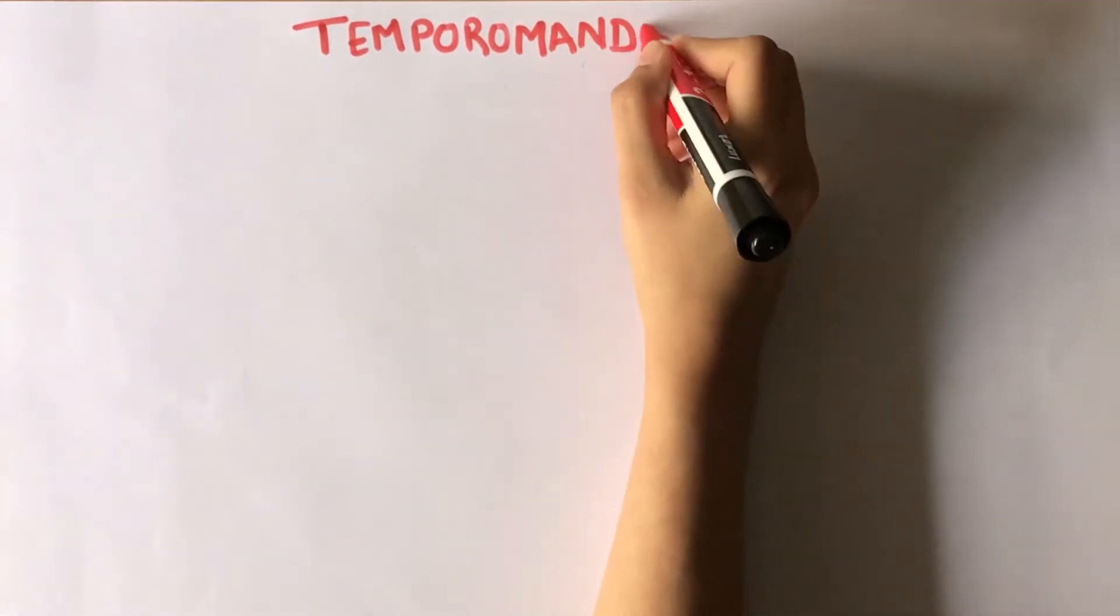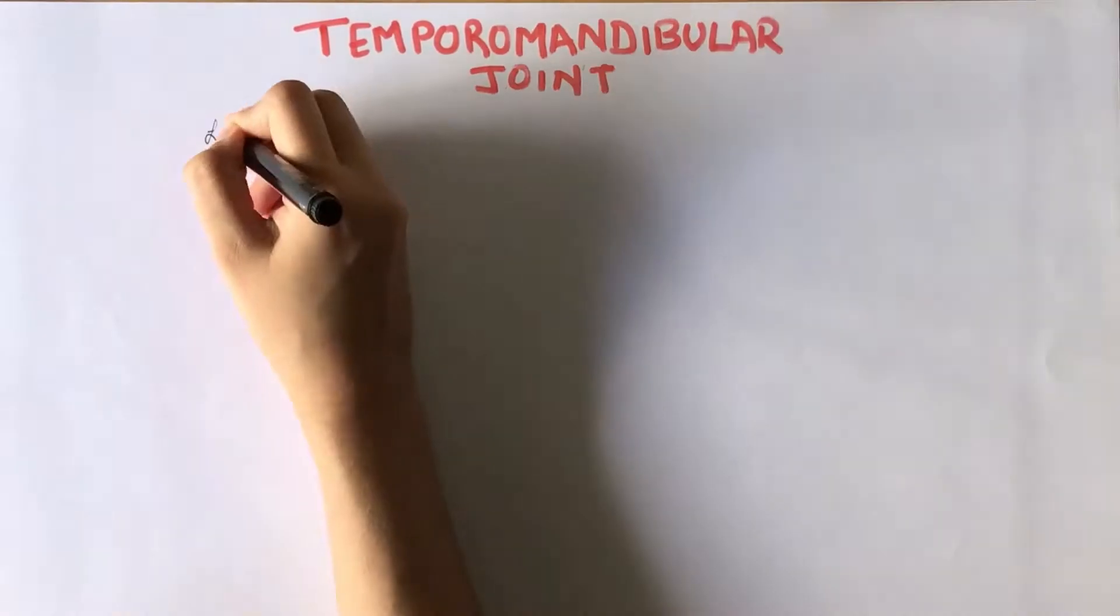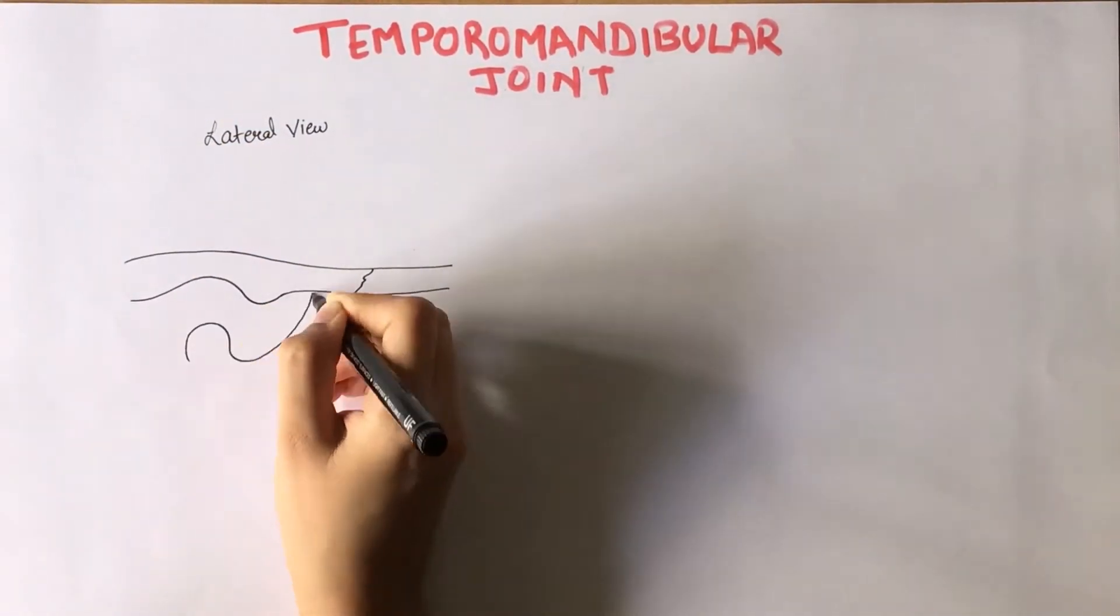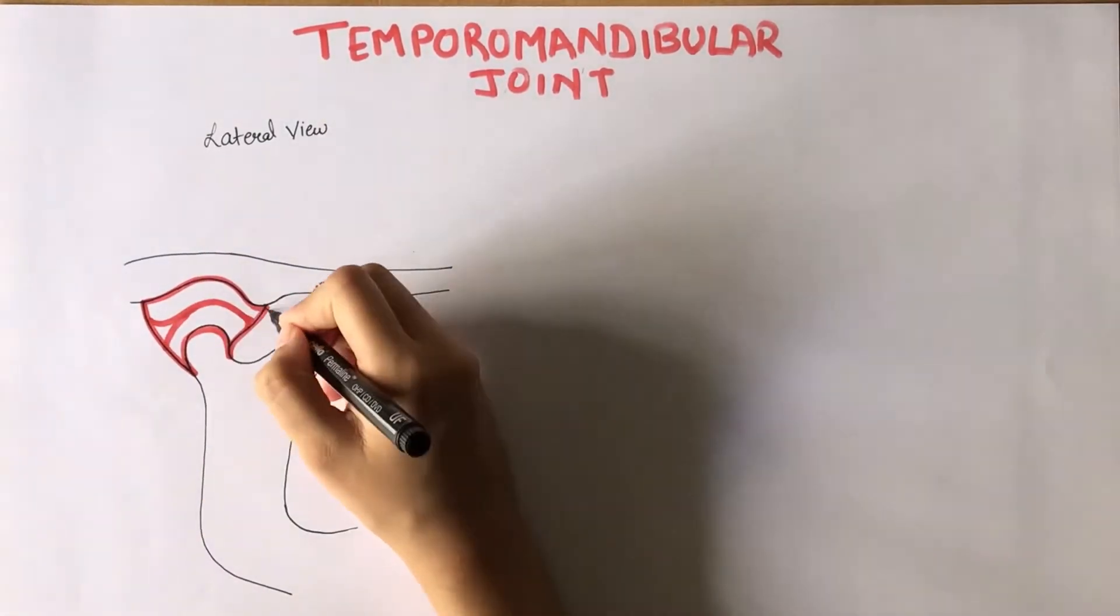Hi everyone, in this video we are going to talk about temporomandibular joint, specifically the articulating surfaces, articular disc, TMJ ligaments, and the joint type.